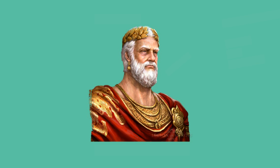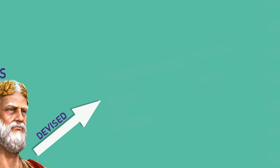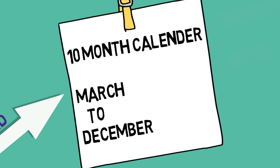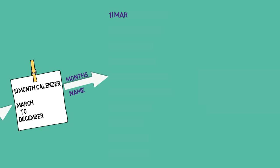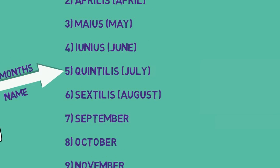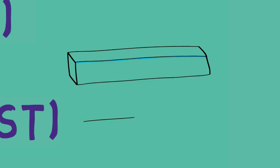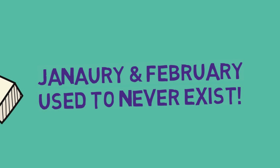The first king of Rome was Romulus. He devised a 10-month lunar calendar that began at the spring equinox in March and ended with December. The months had slightly different names — March was Martius, April was Aprilis, May was Maius, June was Iunius, July was Quintilis, and August was Sextilis. September, October, November, and December were the same as now. All these months alternated between 30 and 31 days, totaling the year with 304 days.